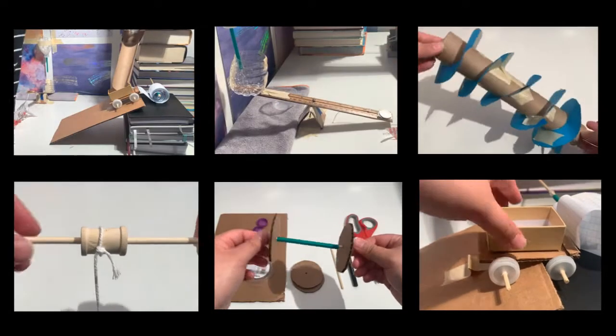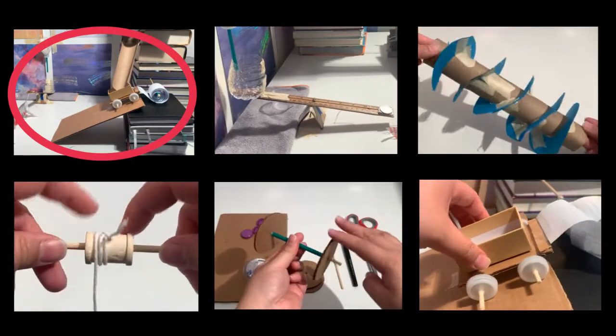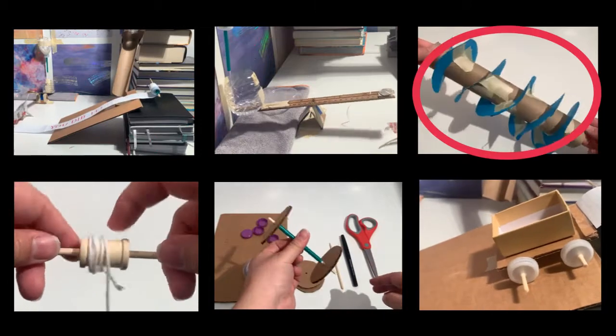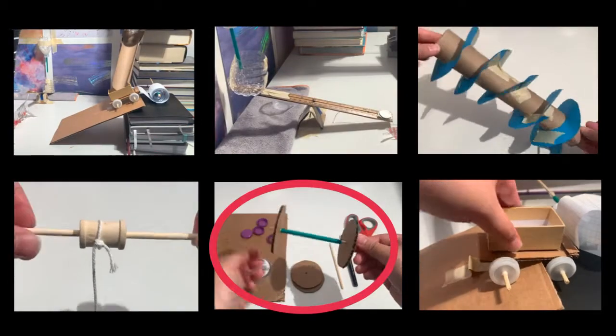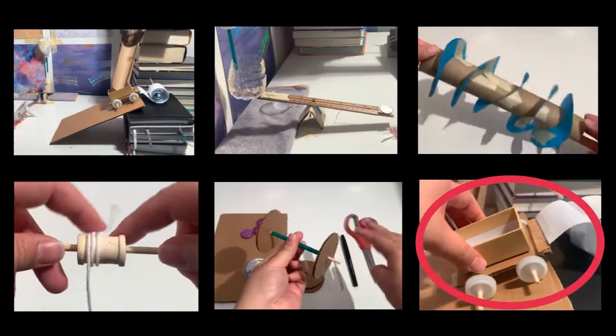These are the six simple machines: incline plane, lever, screw, pulley, wheel and axle, and wedge. Let's get started.